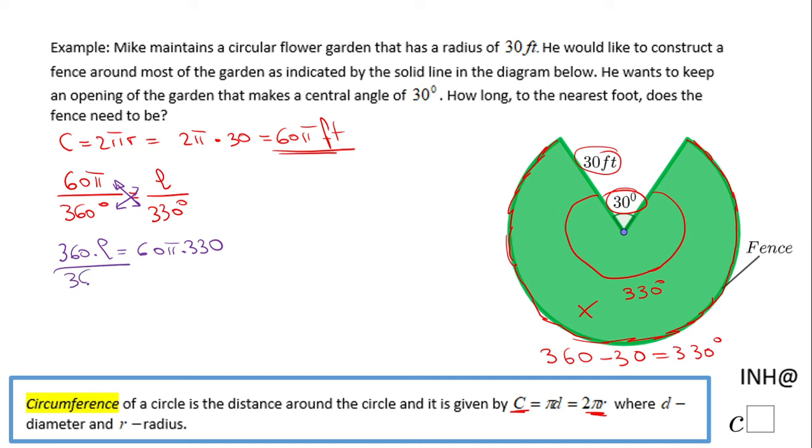The first thing I notice: this 60 goes into 360 six times, so L will be π times 330 divided by 6. But also I can simplify, and I get here 55.